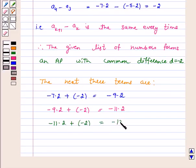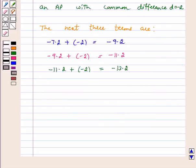Hence, our answer for the above given list of numbers is yes, they form an AP with common difference d equal to minus 2, and the next three terms are minus 9.2, minus 11.2, and minus 13.2. This is our answer.